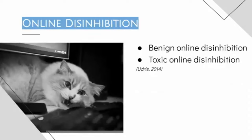Another construct we're measuring is online disinhibition, which refers to the phenomenon of people saying or doing things online that they normally wouldn't do in offline situations. The online disinhibition scale measures two different dimensions: the benign aspects, where people are motivated to engage in positive interactions online — so being anonymous doesn't always lead to negative behavior — and on the other hand, the toxic dimensions, where people are motivated to use the affordances of online platforms to propagate hate and other forms of antisocial behavior.